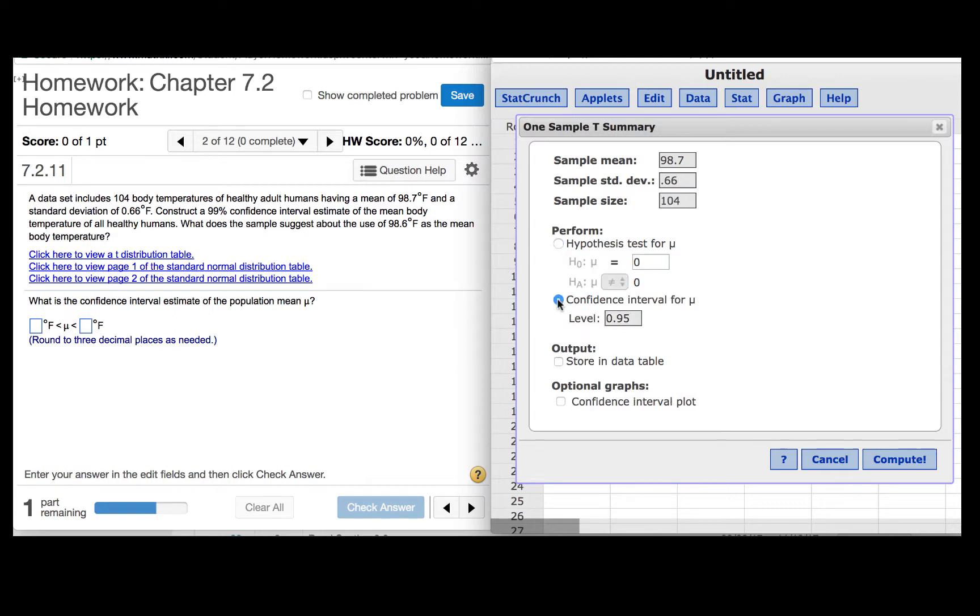Click the confidence interval button and we're told that our confidence level is to be 99%. Click compute.